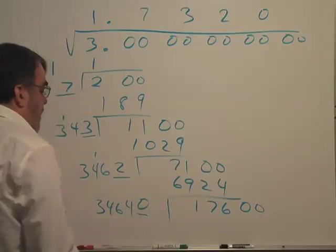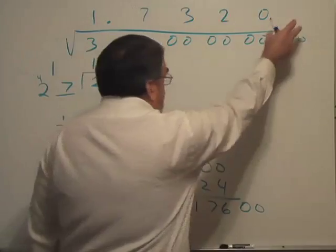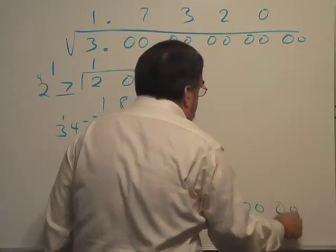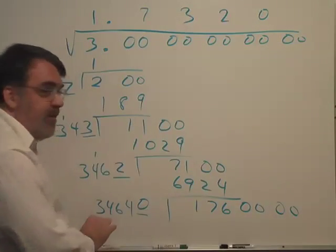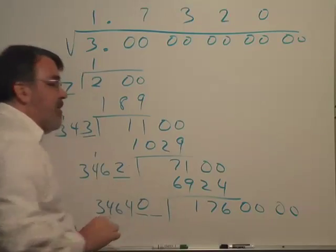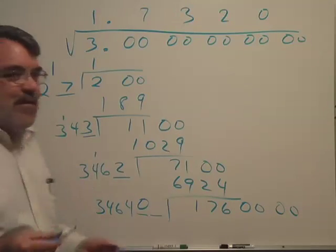We would simply bring down another two zeros, and then we would double the zero and get zero and then we add another place, so on and so forth.